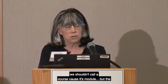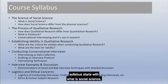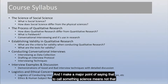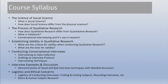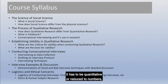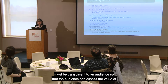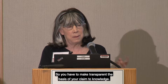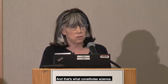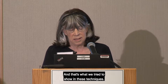The syllabus starts with: what is social science? How does social science differ from the physical sciences? I make a major point of saying that to call something science means not that it has to be quantitative or reduced to numbers, but that the method of collecting the information and the method of analyzing it must be transparent to an audience, so that the audience can assess the results. You have to make transparent the basis of your claim to knowledge — and that's what constitutes science.